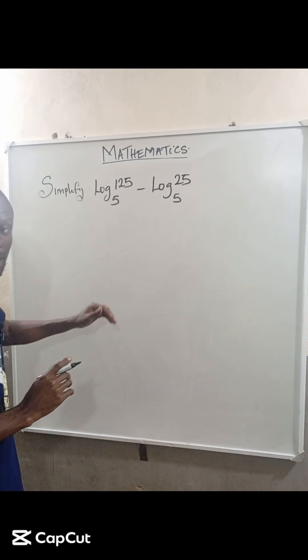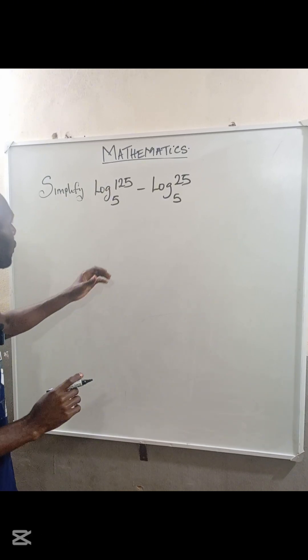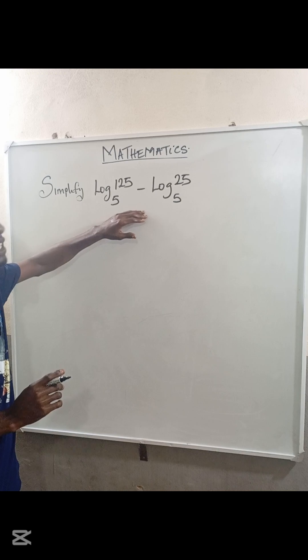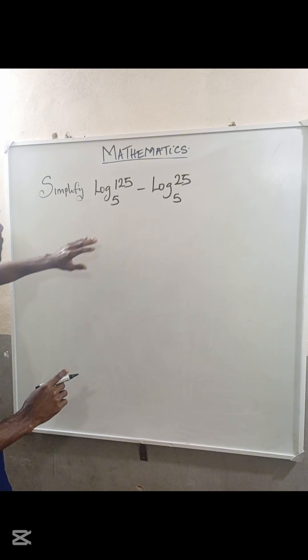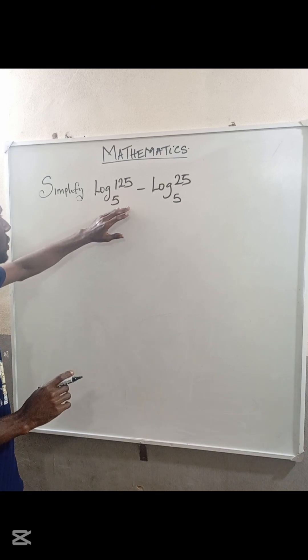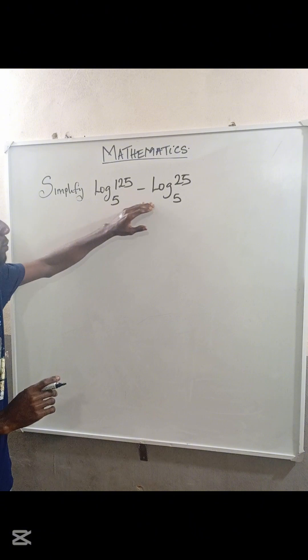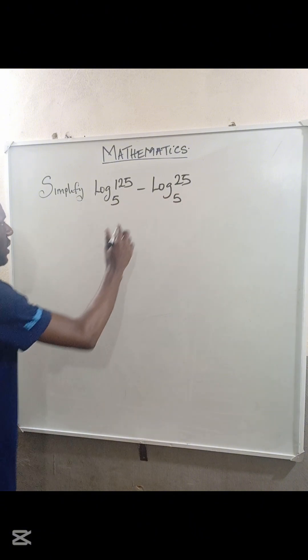Welcome to our logarithm class. We are given to simplify this logarithmic expression: log 125 base 5 minus log 25 base 5.